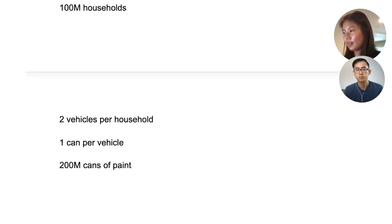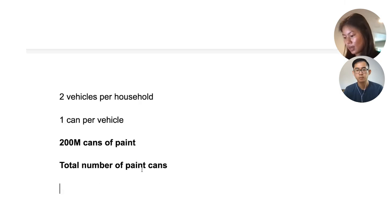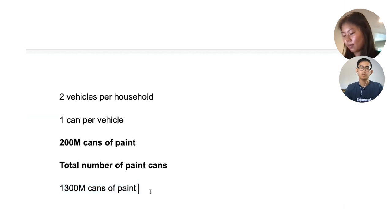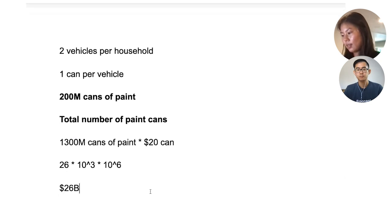So now we have a rough estimate of how many cans of paint we'd need for vehicles and buildings in general. Adding that up to get the total number of paint cans. Based on my experience going to stores like Kelly Moore, cans of paint are about $20 per can. Multiplying that out, that comes to about 26 billion dollars.